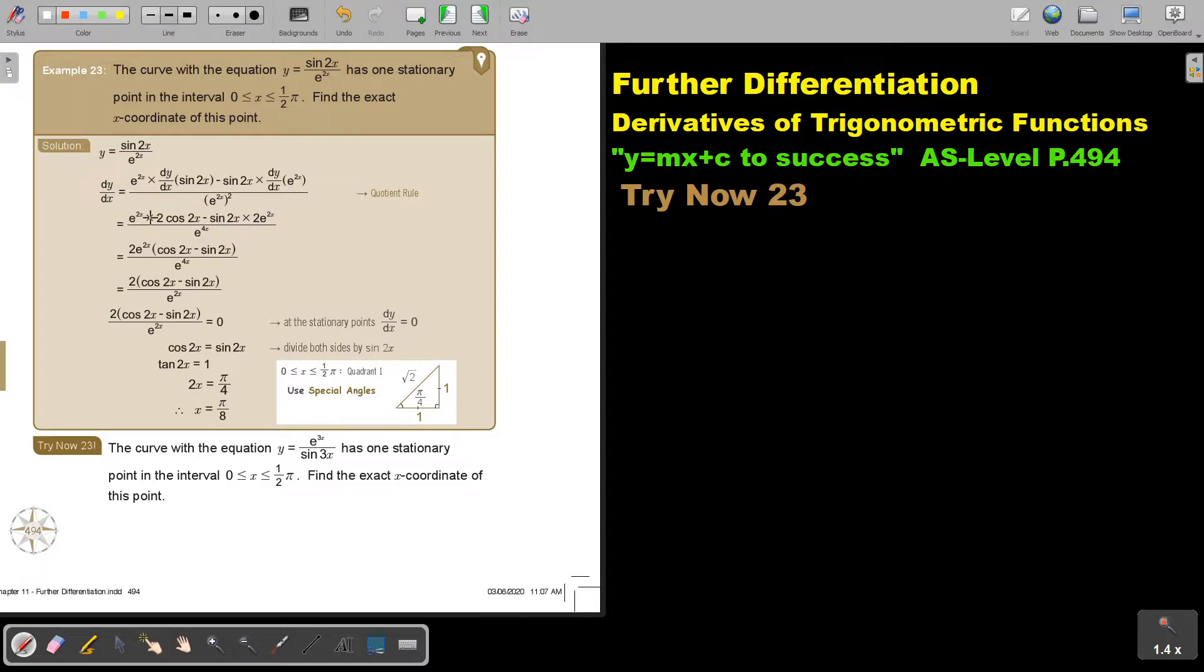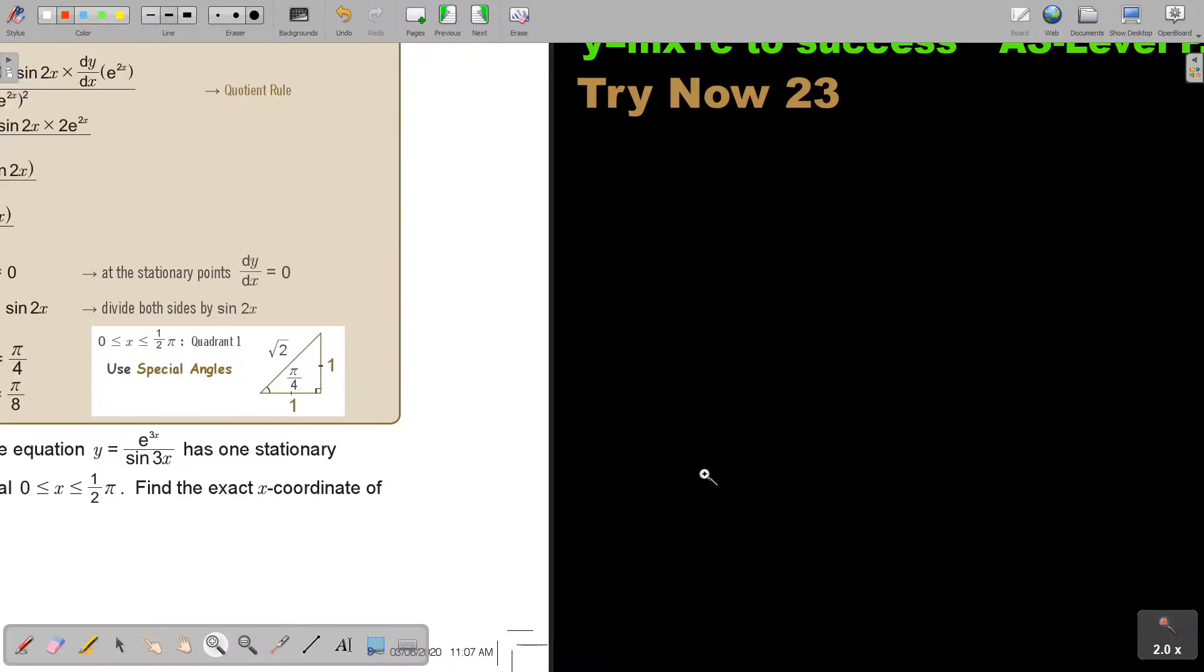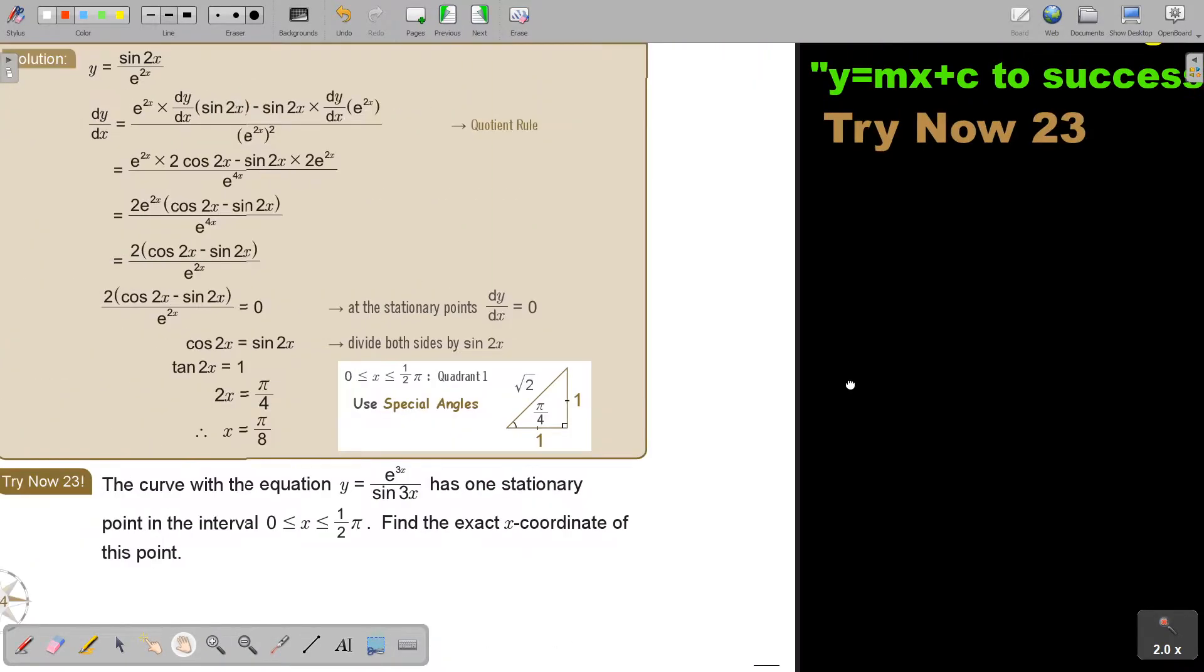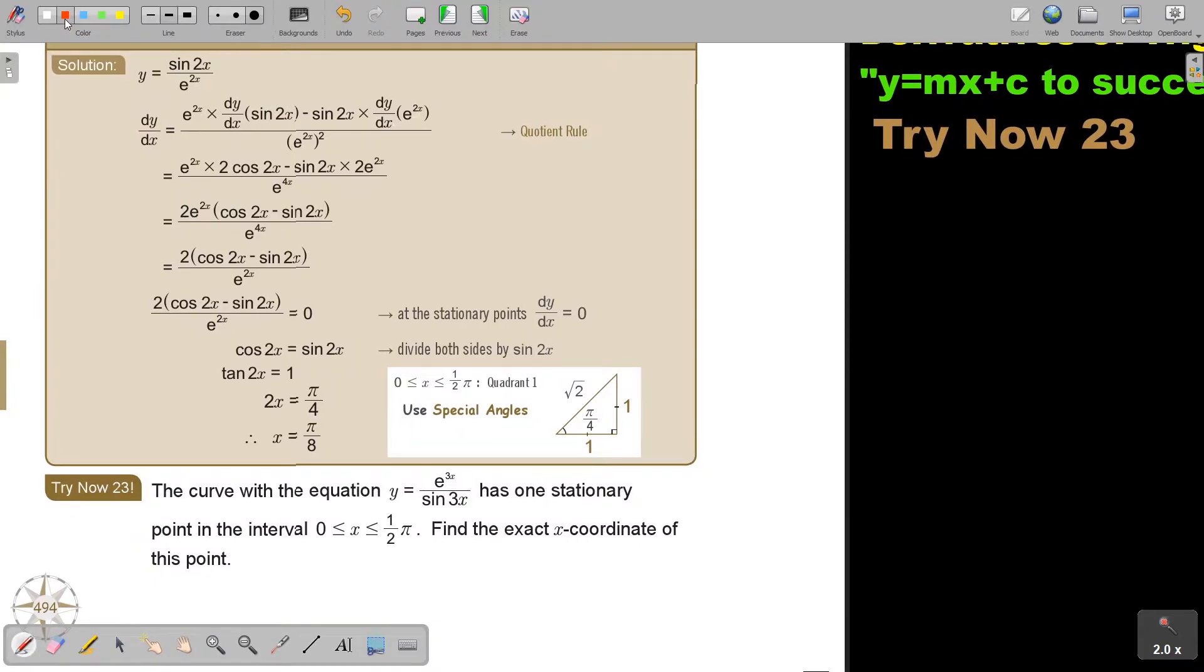Now, you can take out e to the power of 2X as a common factor. Then you end up with this and this. Can I just show you, I would like to make it a little bit bigger so you can see the small numbers. What you basically can do is, if this one was, remember, e to the power of 2X times e to the power of 2X. I think you will see better that this is now cancelling with this. And that's why I end up at this step, only with e to the power of 2X.